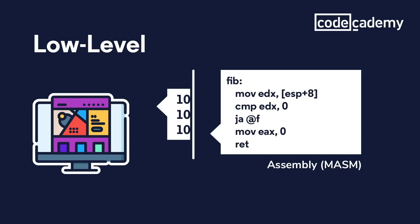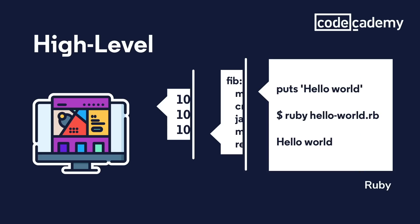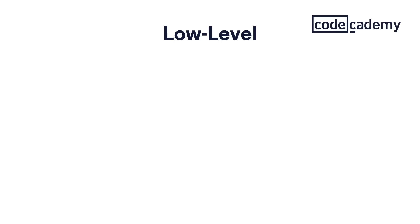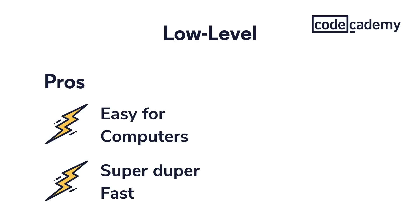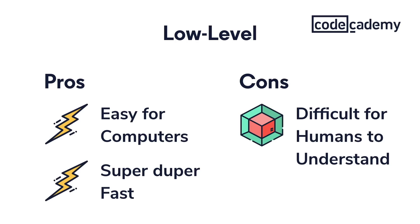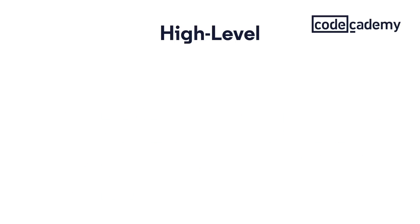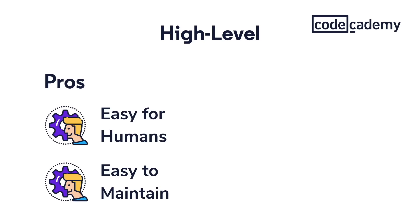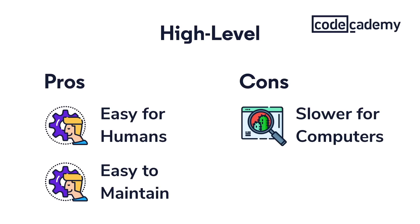There are two major distinctions in programming languages. Some languages are closer to how computers communicate, referred to as low level. Some, however, are closer to the way that you and I would converse, and those are called high level languages. There are pros and cons to each. Low level languages are easy for computers to understand and super fast to run, but they're very difficult for humans to learn and understand. High level languages are easy for humans to learn, use, and debug, but slower for computers because they have to go through multiple translation cycles.